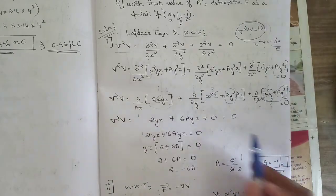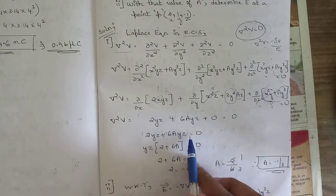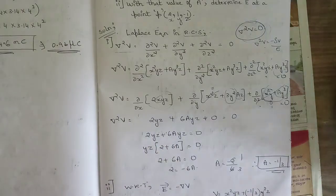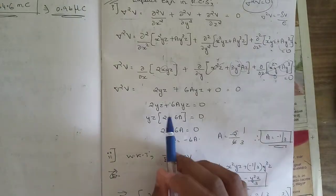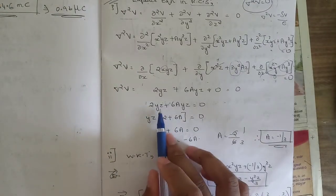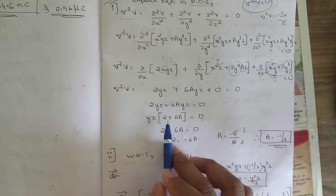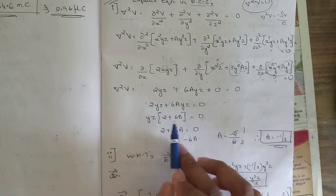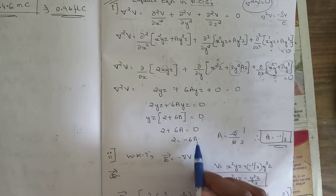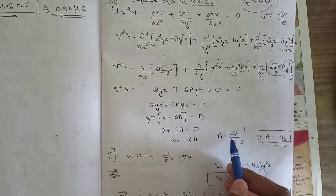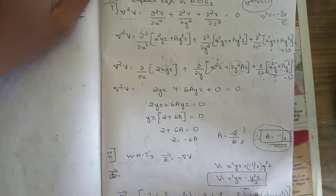So our equation becomes 2yz + 6ayz = 0. Taking yz common: yz(2 + 6a) = 0. Bringing yz to the other side: 2 + 6a = 0, so 2 = −6a, giving a = −2/6 = −1/3. This is how we find the value of 'a' by applying the Laplace equation.